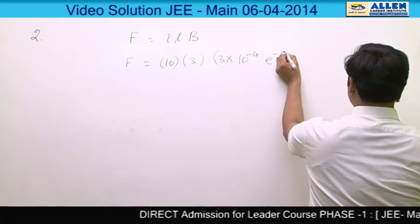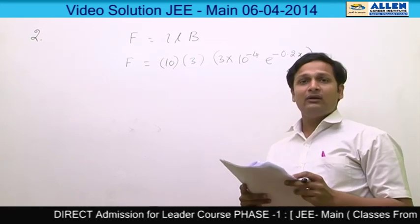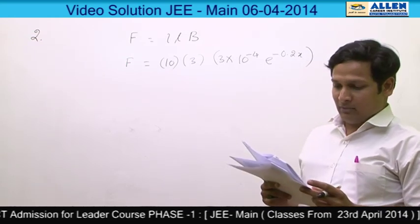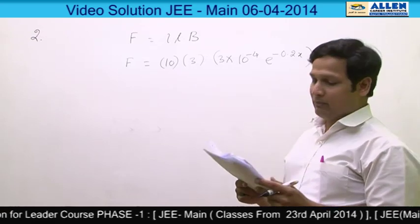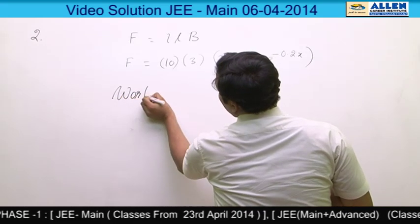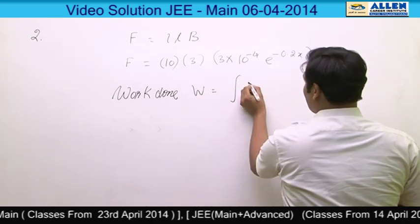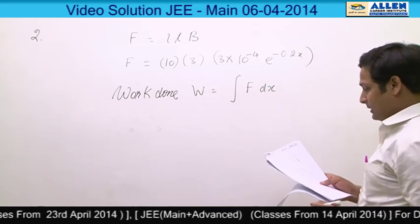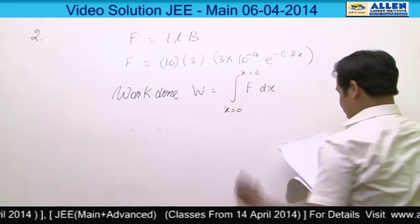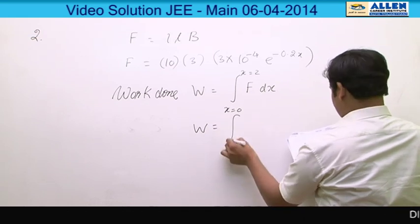Since in this question power delivered is asked but it is not mentioned whether it is instantaneous or average power. According to the question we have to calculate average power delivered by the external agent, so first we will calculate work done. Work done W will be the integral of F dot dx, with limits from X = 0 to X = 2.